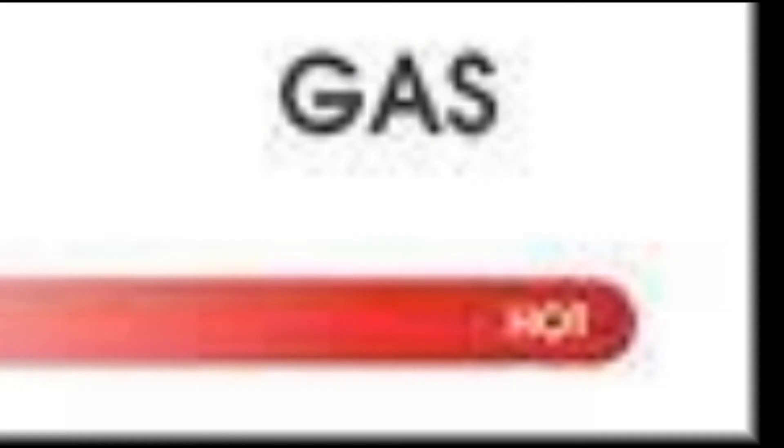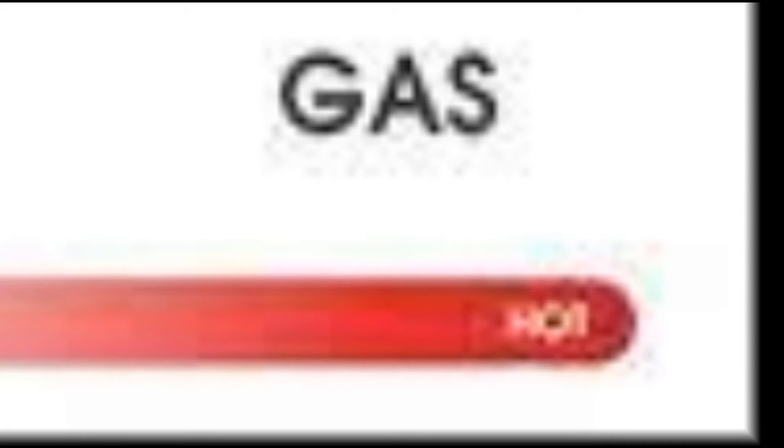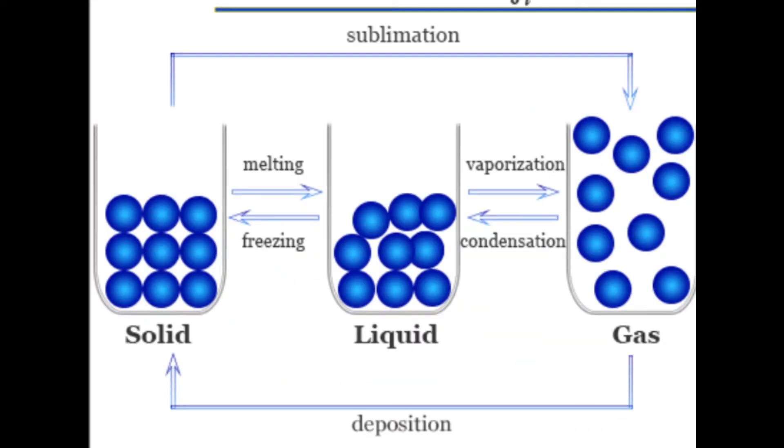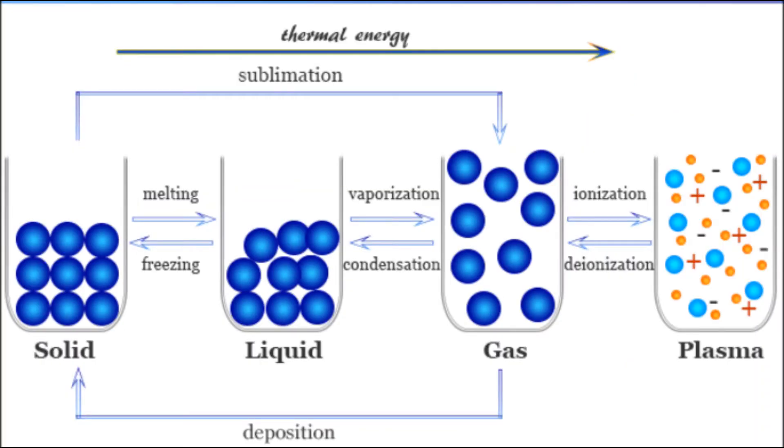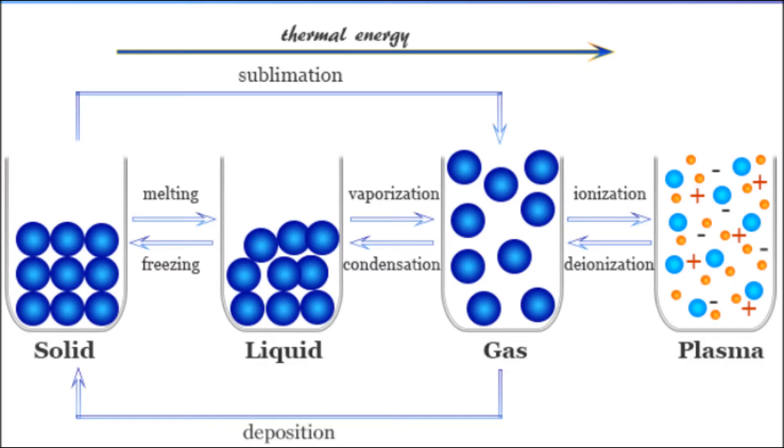You might think gas is the hottest state of matter because the last photo had three states of matter. But on this photo, it demonstrates one more state of matter, plasma. Plasma is formed when intense heat is applied on gas.